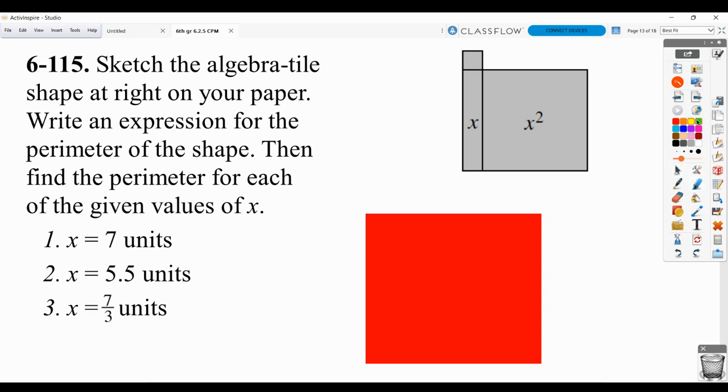In terms of perimeter, what we would have is this length is x, so is this, so is this, so is this.